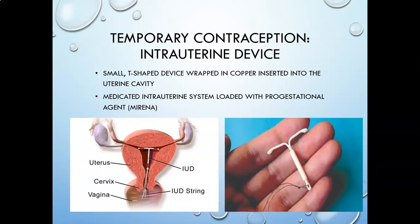The intrauterine device is a combined foreign-body and hormonal method. Looking at the picture, you can see the actual size — it's a small plastic or copper device inserted into the uterus. It acts like a foreign body, preventing a fertilized egg from attaching to the uterine wall, and also releases hormones over time to prevent ovulation as well. It has a dual purpose.